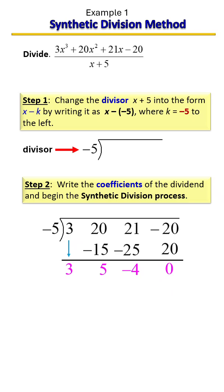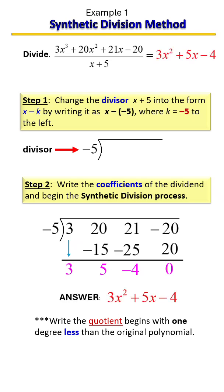You have to go back in and put the variables in. Always write it one degree less than the original polynomial. So this was a third degree polynomial, so when we write an answer we start with degree 2, degree 1, and then our constant. So our answer is 3x² plus 5x minus 4.